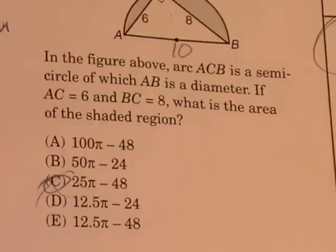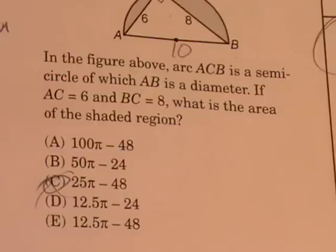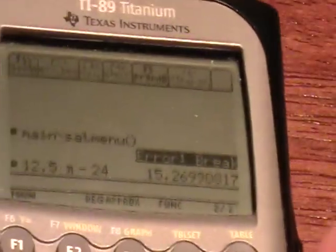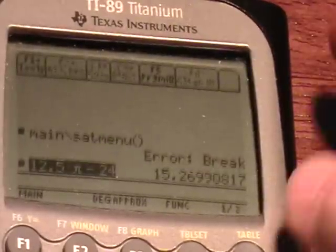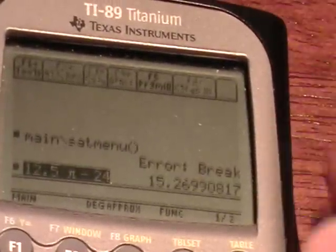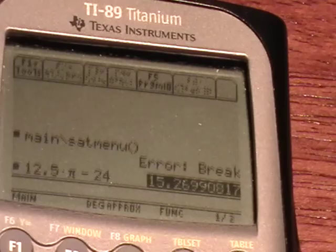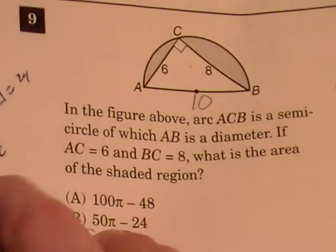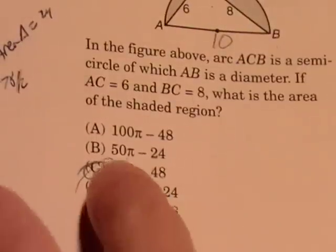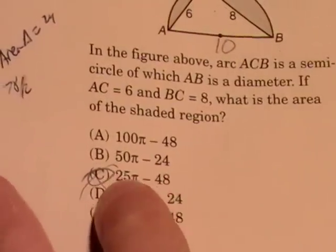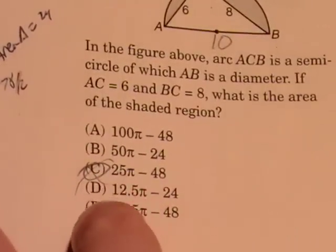12.5 times pi minus 24, and for verification, 12.5 times pi minus 24 is in fact 15.27. If you look at all the answer choices, all of these end up with a much higher positive value.